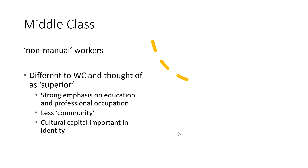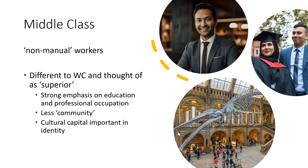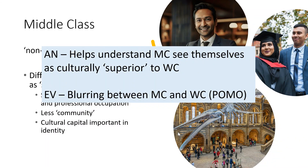Cultural capital is really important to middle class identity — they want to show off their intelligence through the books they read, the places they go, and the holidays they take. They might visit the Colosseum in Greece rather than a holiday camp, go to museums, attend graduations, and hold professional power jobs in society. This helps us understand how the middle class see themselves as culturally superior, and it helps define the differences between working and middle class — manual vs. non-manual, education vs. non-education.